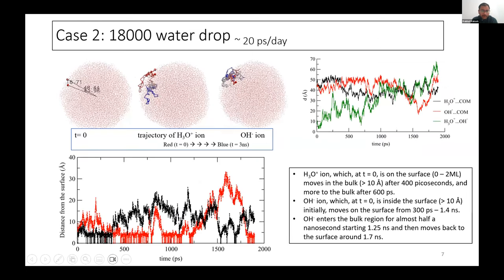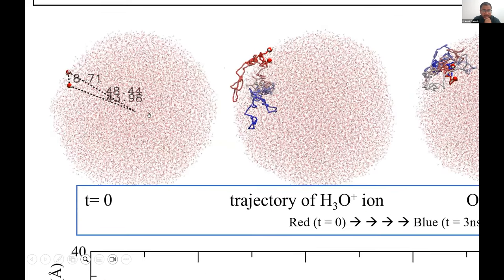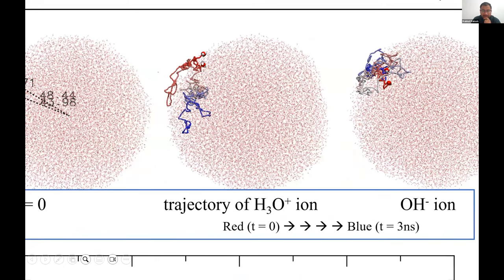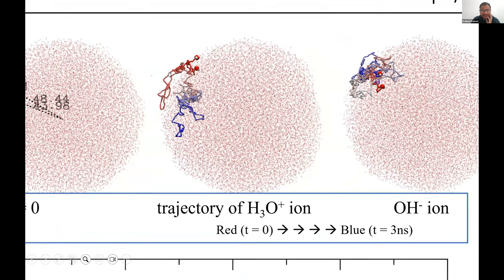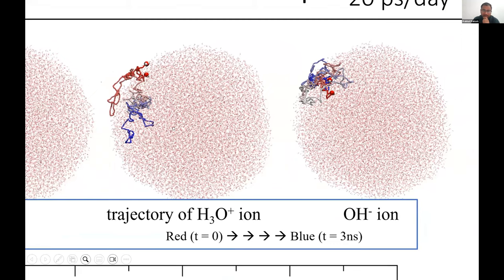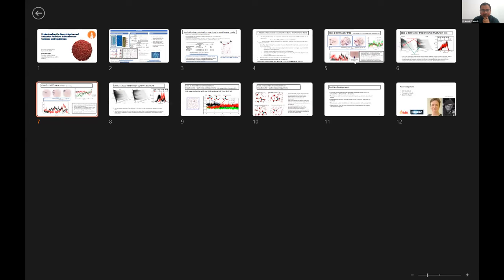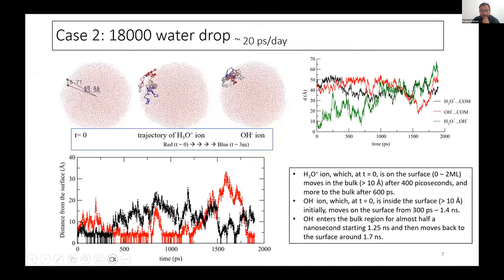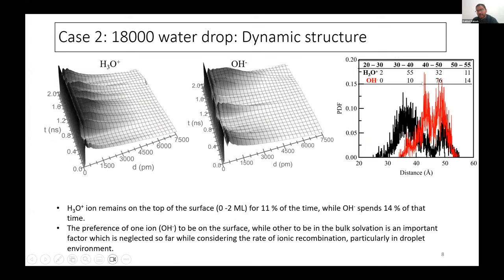We have another case with 18,000 water molecules, for which we get around 20 picoseconds per day performance. We cannot even imagine running DFT on these systems, but the Rex1 force field can describe them very well. We observe that a hydronium ion moves mostly on the surface, sometimes going three or four monolayers inside the bulk, while hydroxide mostly spends its time on the surface. We find that about 14% of the time hydroxide prefers the surface while hydronium is at 11%. There may be some initial bias because both ions start at the surface, but hydronium tends to move inside the bulk after the initial period.